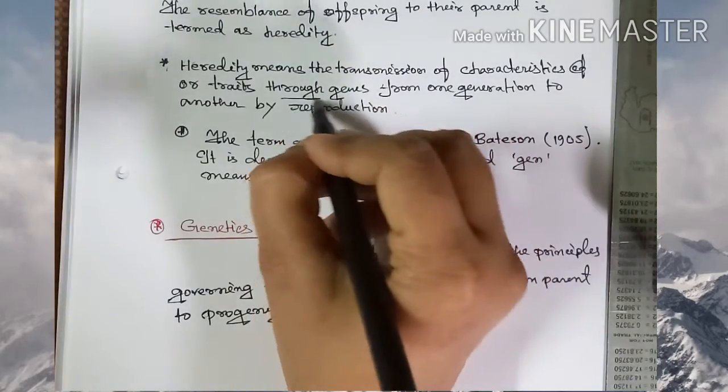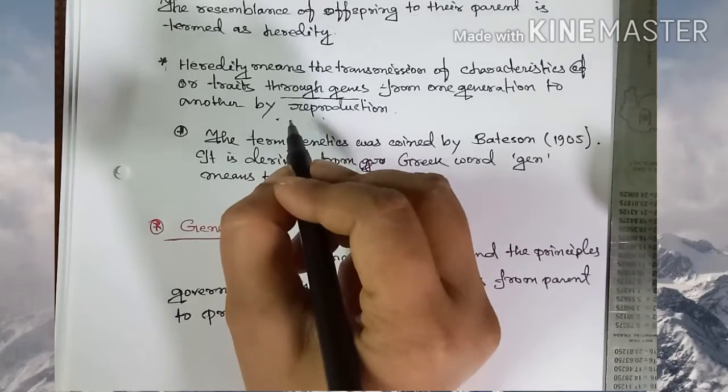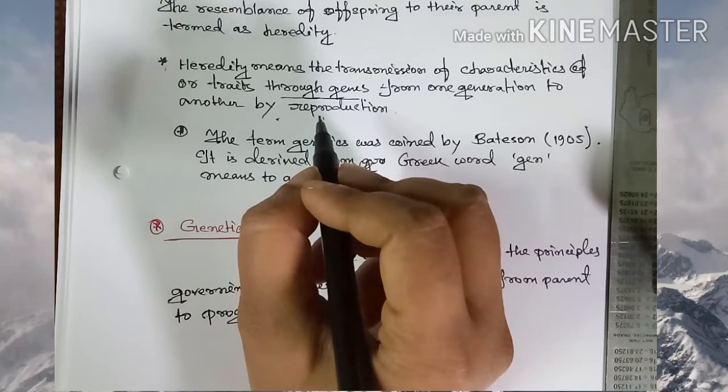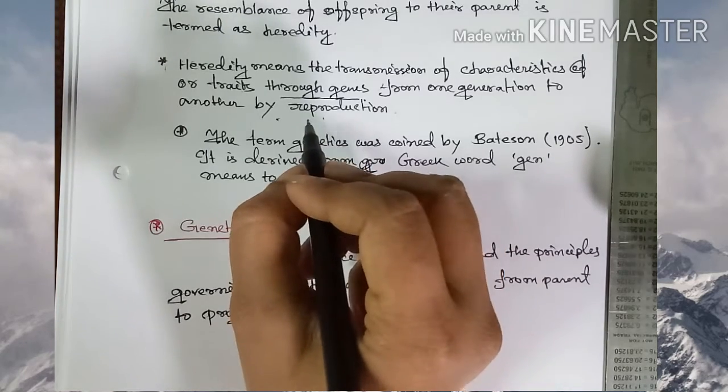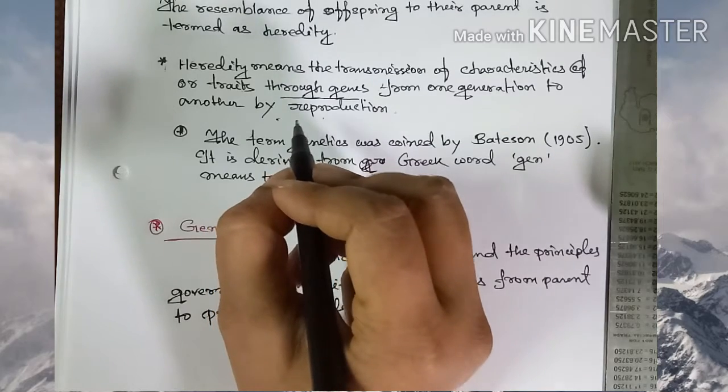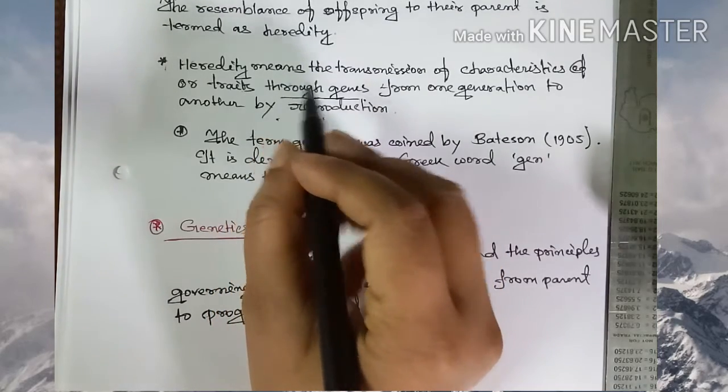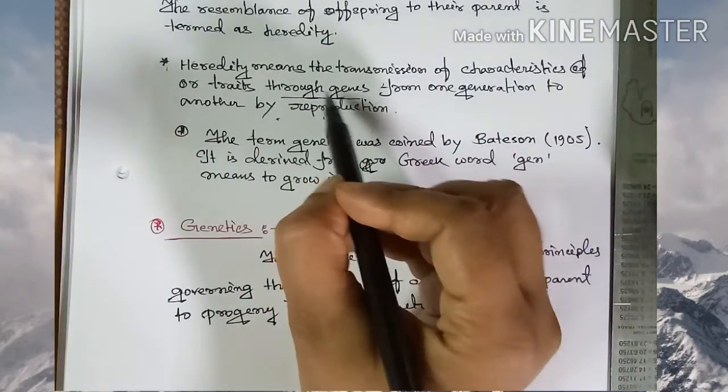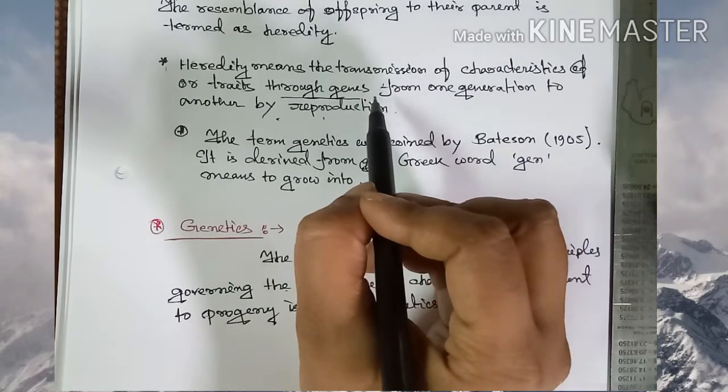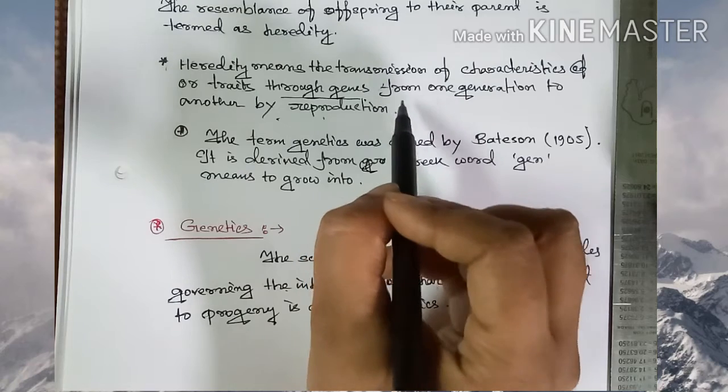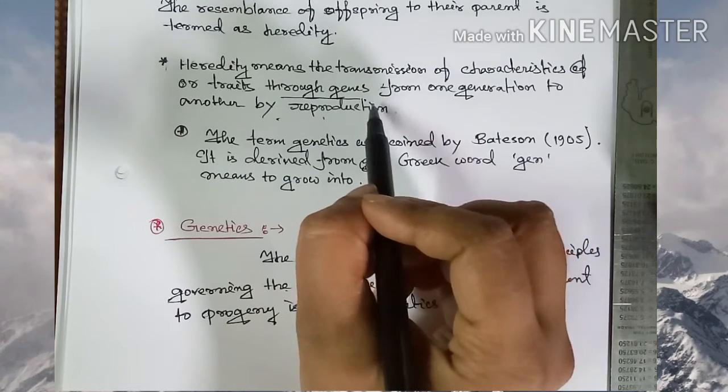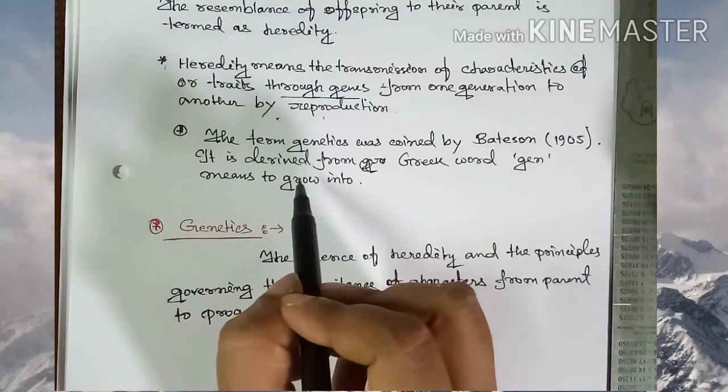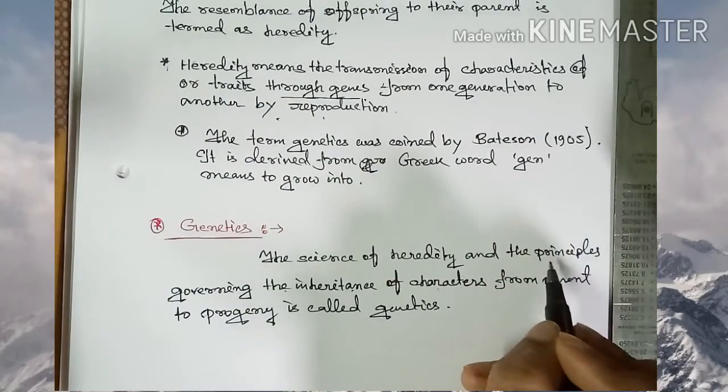Through genes, by the process of reproduction, the genes containing some characters or traits are transferred from parent to child, from one generation to the next generation. This is called heredity.